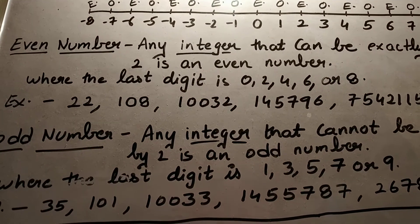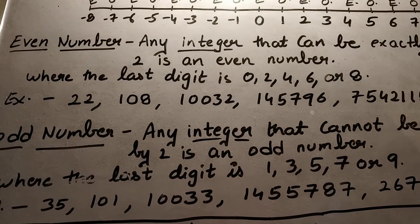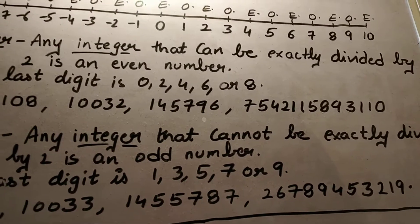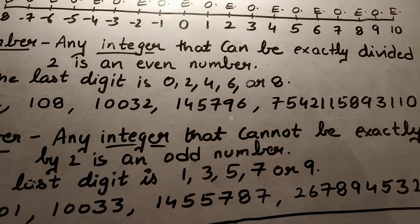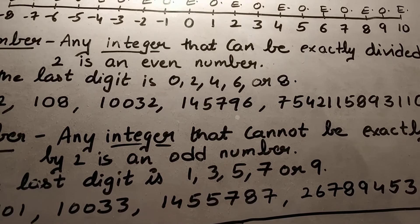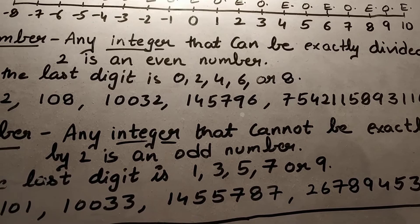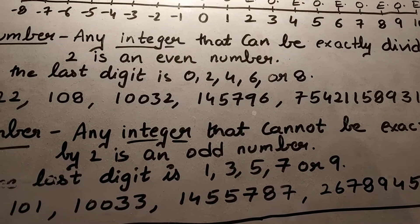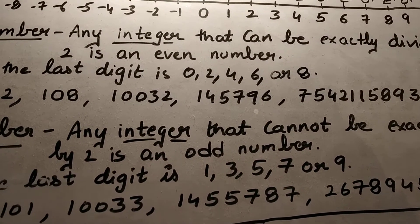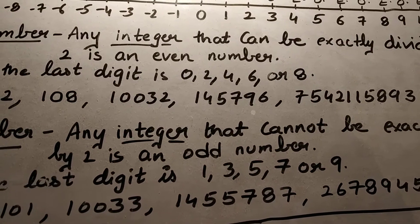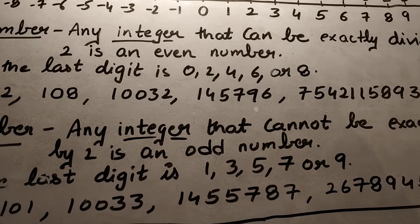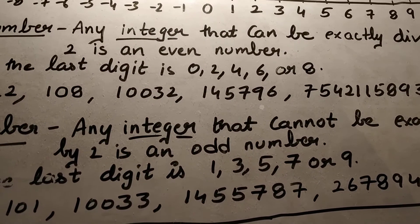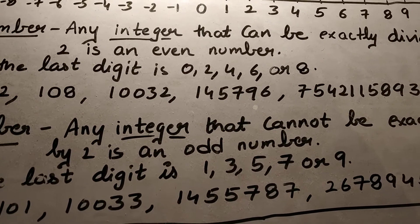Now let's see the definition of an even number. Any integer that can be exactly divided by two is an even number. What is the definition of an integer? All counting numbers are integers, except decimal and fraction numbers.